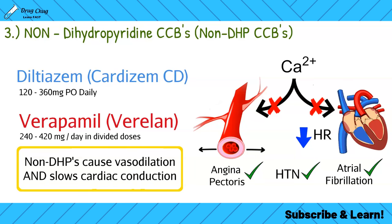An important drug interaction point: both verapamil and diltiazem are CYP3A4 enzyme inhibitors, meaning they inhibit the liver enzyme that processes drugs. CYP3A4 is one of the most common enzymes used to break down or activate drugs. It's essential to review a patient's full medication regimen for contraindications, since inhibiting CYP3A4 can cause buildup of other drugs they're taking.